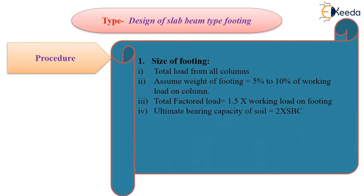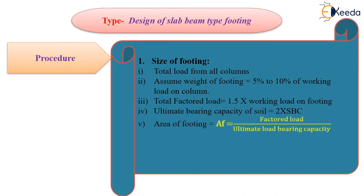If in the problem statement only the safe bearing capacity of soil is given, then we have to multiply it by 2 so that we will get the ultimate bearing capacity of soil. After that, we will find out the area of footing using the formula: factored load divided by ultimate bearing capacity of soil. In the problem statement, either they will give the length of footing or width of footing, and from that we can find out the other value.